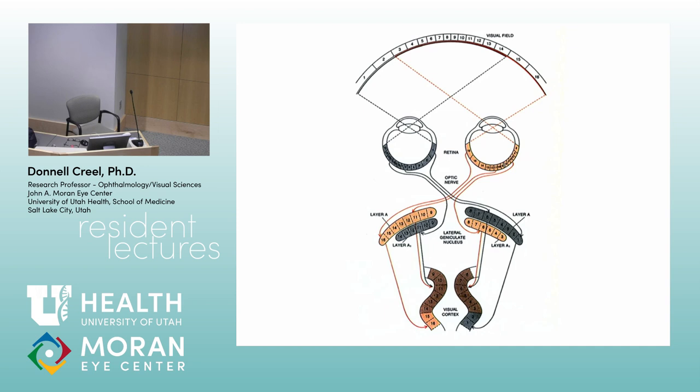The first time I showed the fly test to a human albino, I was standing behind him explaining it and said, 'You see how the wings come off the page?' He looked at it for a few seconds, turned and looked over his shoulder at me and said, 'It's a flat picture.' Human albinos don't have the underlying basis for binocular stereovision, so they don't see the fly wings coming off the page.